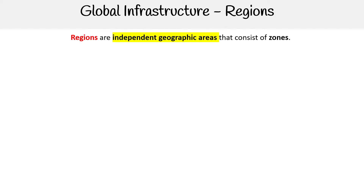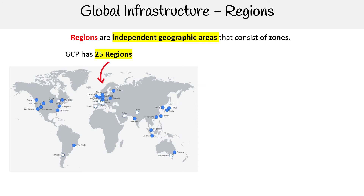Hey, this is Andrew Brown from Exam Pro, and we are looking at regions for global infrastructure. Regions are independent geographic areas that consist of zones. GCP has 25 regions. Here we have a map — the blue ones are active regions and the white ones indicate planned regions in the future within the next three years. Most, if not all, of their regions have three zones in them.